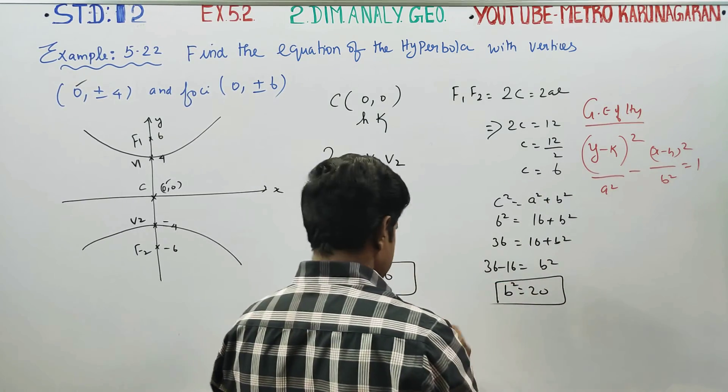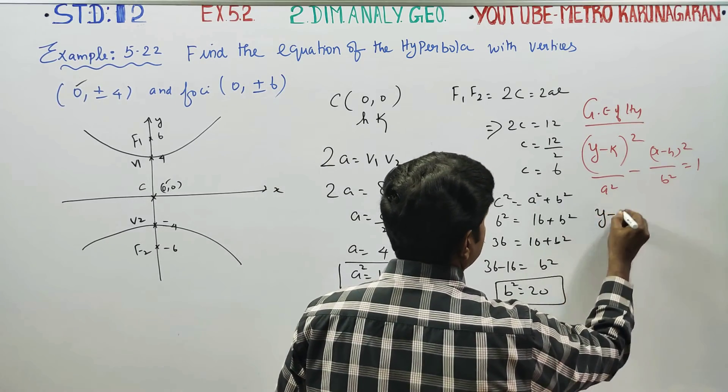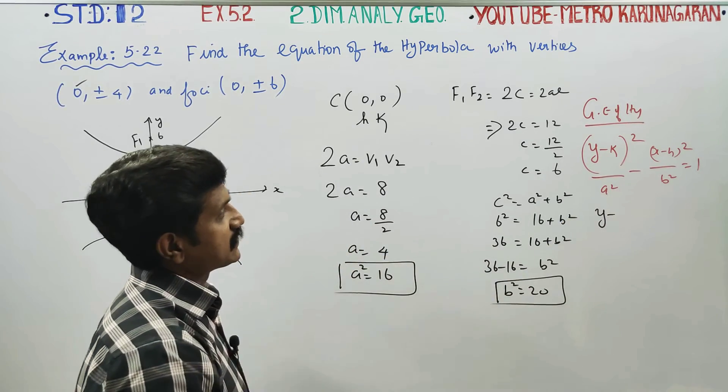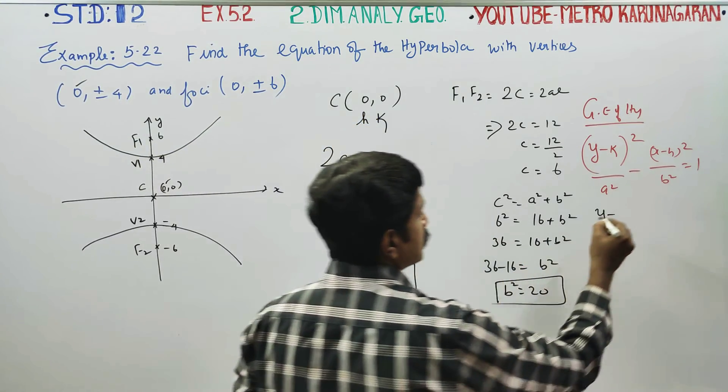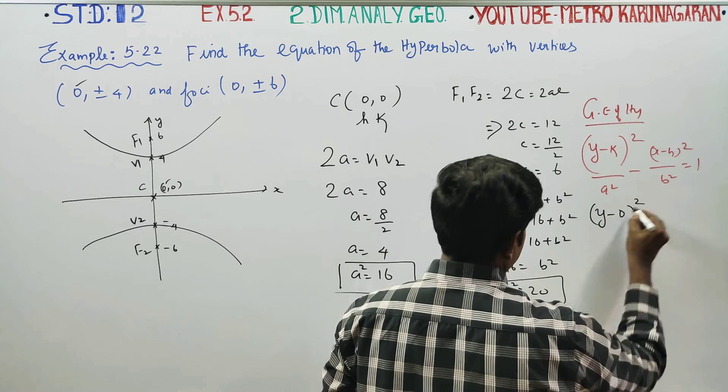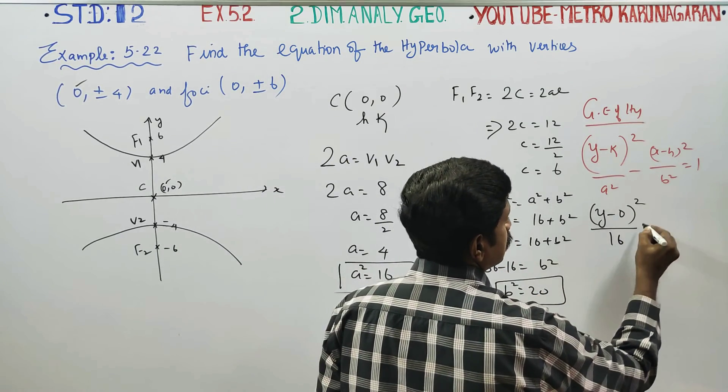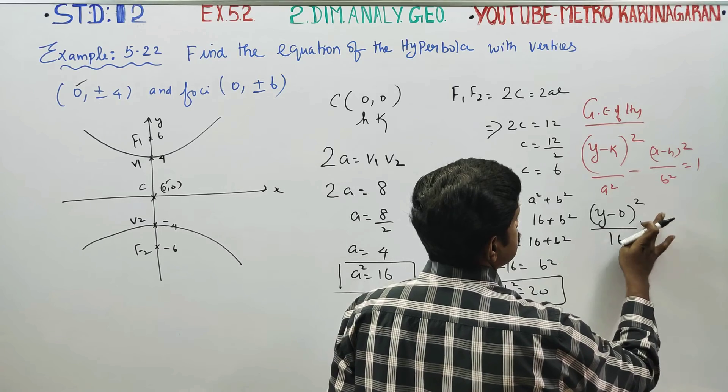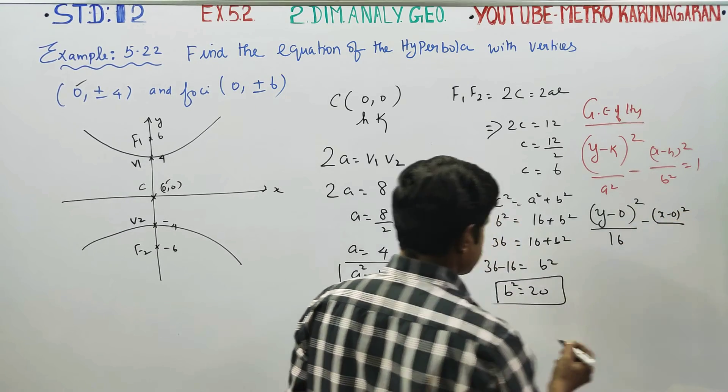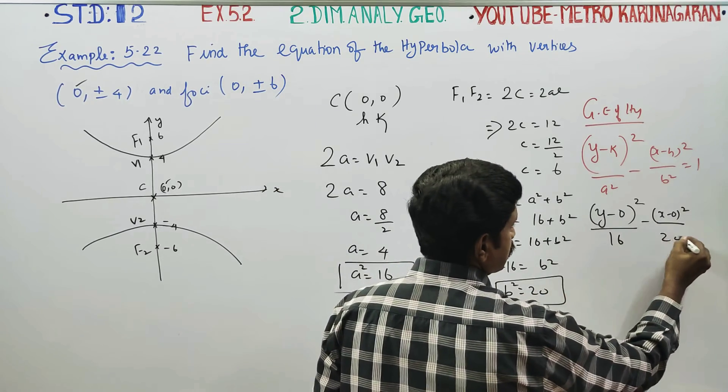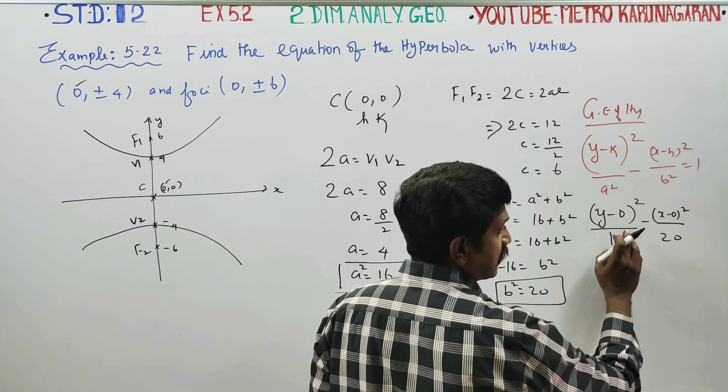So, we substitute y minus k, k is 0, plus x minus h is 0 the whole square. What is my a square value? A square value is 16. B square is 20.